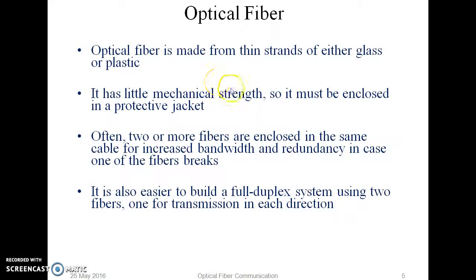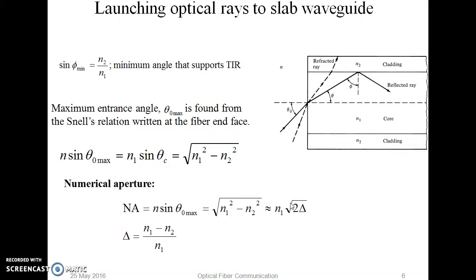We have optical fiber, which can be made up of different materials, and based on that we can define it. It can be used for full duplex system. So, let us see the definition of some characteristics of fiber, which is known as numerical aperture.